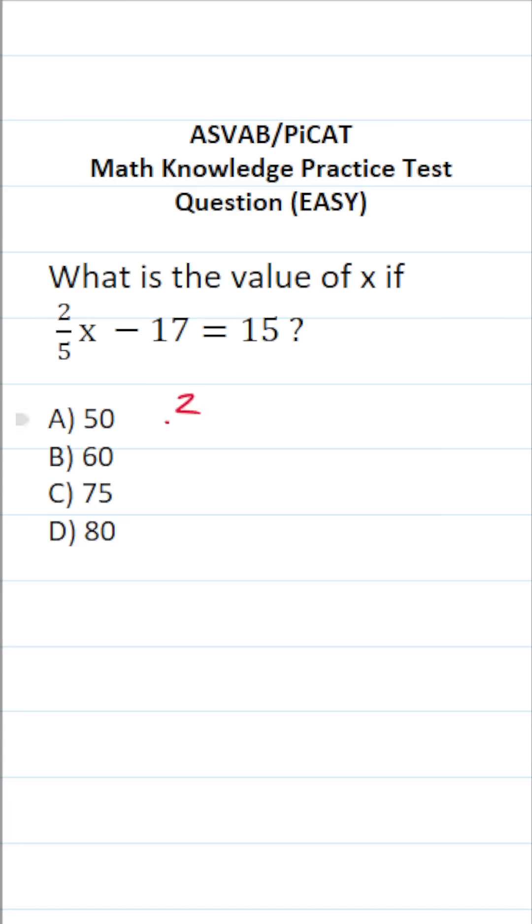So in this case, we're going to be solving the equation two-fifths x minus 17 equals 15. Since you're not permitted to use the calculator or reference sheet on the actual ASVAB or PyCat, I encourage you to copy these questions down on your own scratch paper and work them out accordingly.